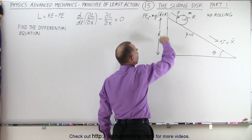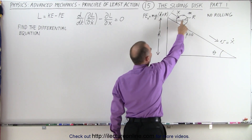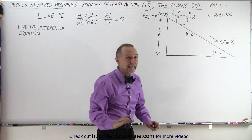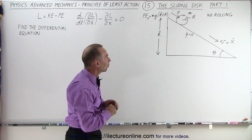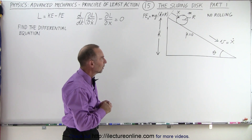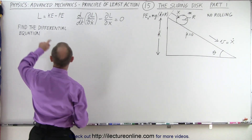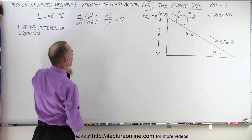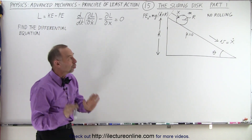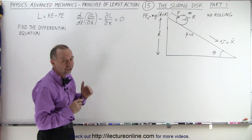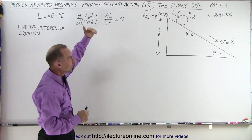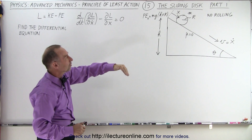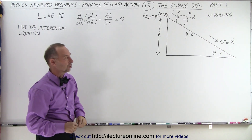The disk starts at initial height h. Notice that the center of mass will be at h plus r, so the initial potential energy will be mg times (h plus r). We need to find two equations — one for kinetic energy and one for potential energy — in terms of the variable x, defined as the positive distance going down the slope along the hypotenuse.